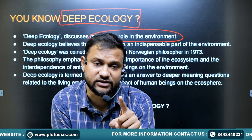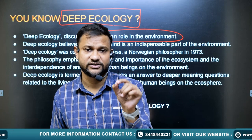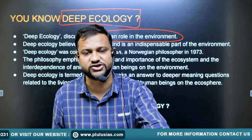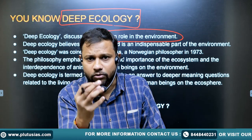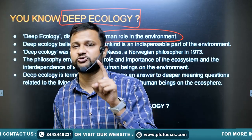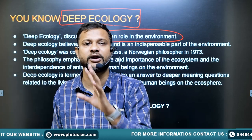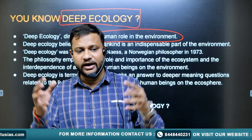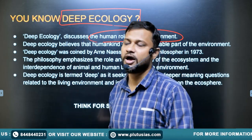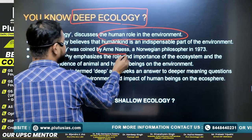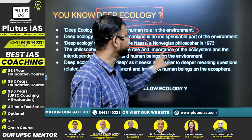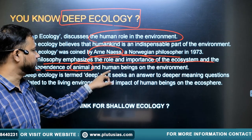However, deep ecology considers that every living thing, every living species, is rather very key and important when it comes to environmental study and overall understanding of nature. For example, even if you consider a mosquito, we tend to think it has no role, but mosquito is equally important as any other species. Deep ecology considers every aspect on the earth's surface as significant. It was coined by Arne Næss, a Norwegian philosopher, in 1973, and this philosophy emphasizes the role and importance of the ecosystem and the interdependence of animals and human beings on the environment.